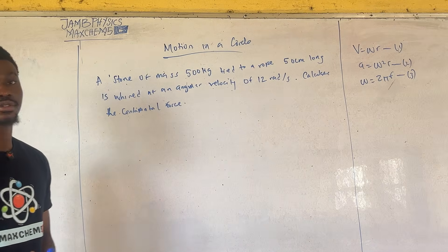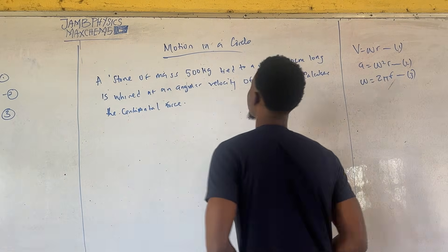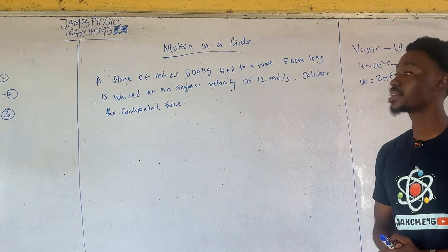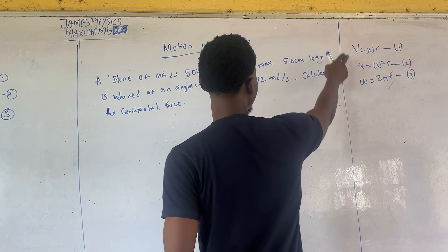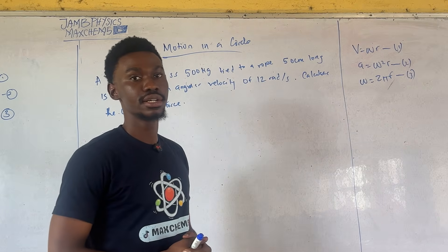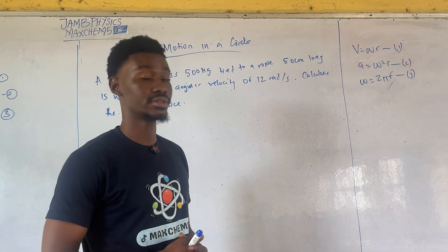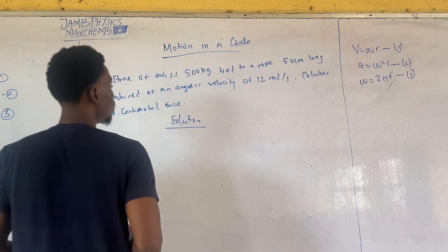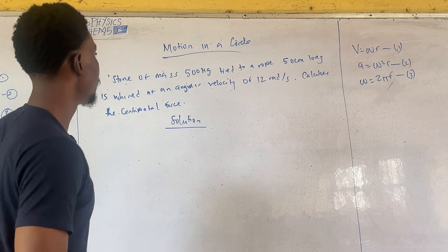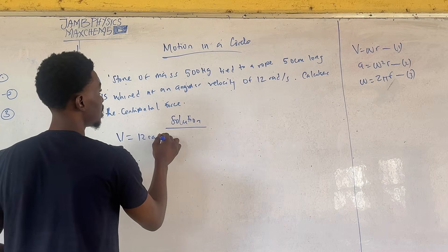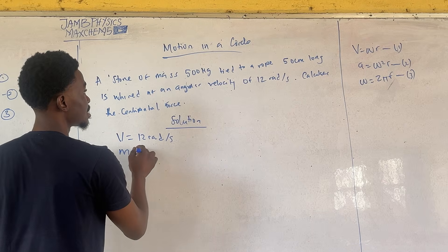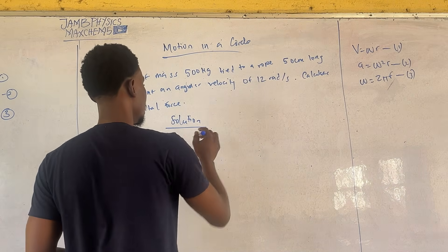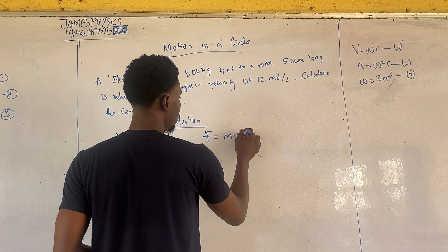Let's tackle another question on circular motion. A stone of mass 500 grams, tied to a rope 50 centimeters long, is rolled at an angular velocity of 12 radians per second. Calculate the centripetal force. The equations listed are some vital equations in centripetal motion and simple harmonic motion — do memorize them. The force is given as F = mv²/R.